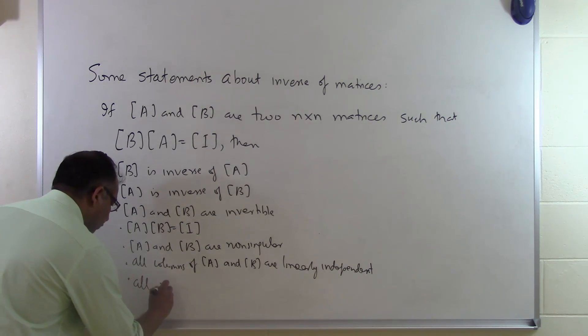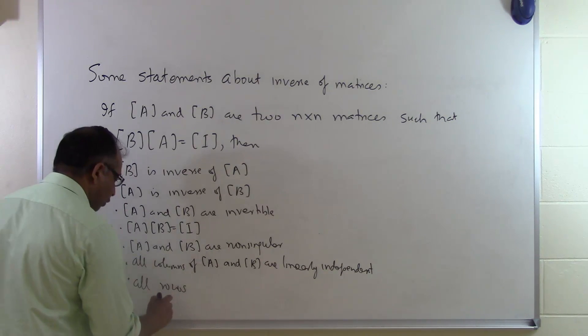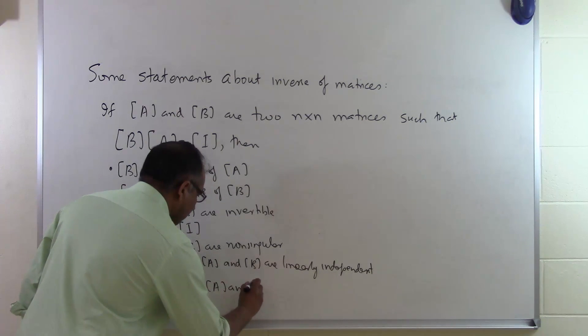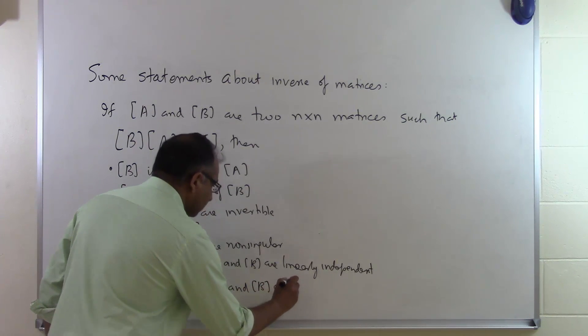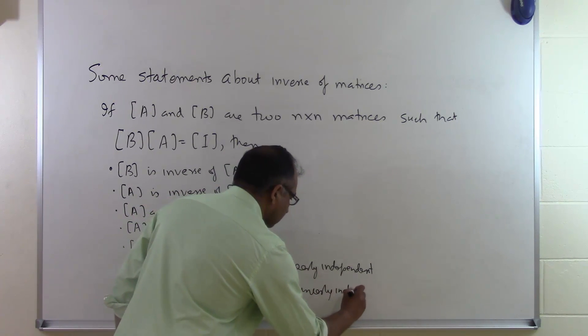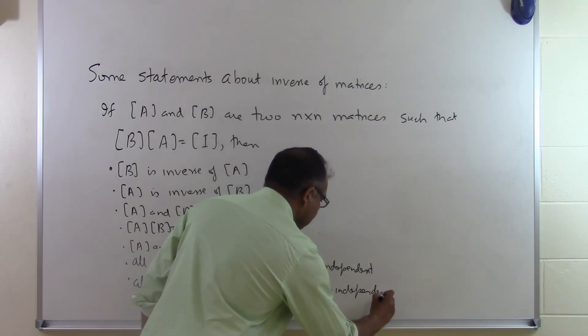And so is it true for rows. So all rows of A and B are linearly independent.